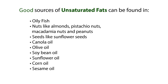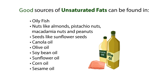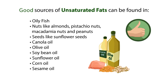Good sources of unsaturated fats include oily fish, nuts like almonds, pistachio nuts, macadamia nuts, peanuts, and seeds like sunflower seeds. Also, use cooking oils with a higher proportion of unsaturated fats like canola oil, olive oil, soybean oil, sunflower oil, corn oil and sesame oil.